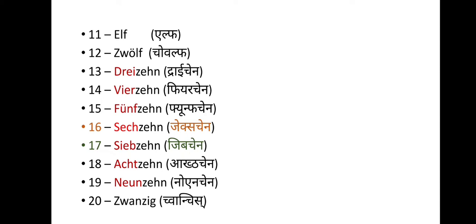From 13 to 19 we have 'zehn' in all the numbers, just as in English from 13 to 19 we have 'teen'. In German we also have 'zehn', but in 16 and 17 there are little differences — the complete form of 'sechs' and 'sieben' are not fully written.